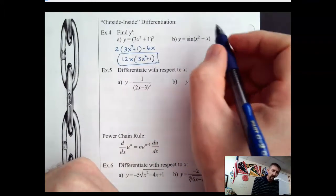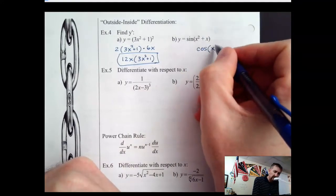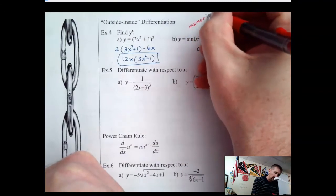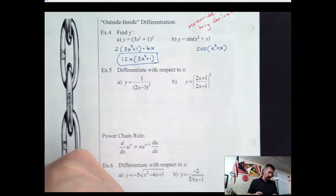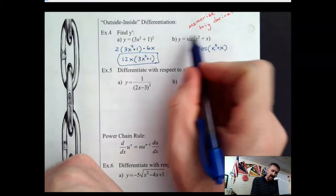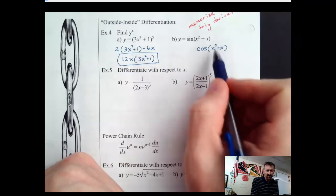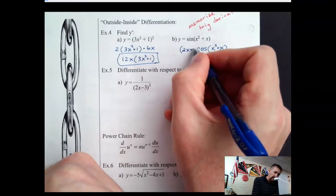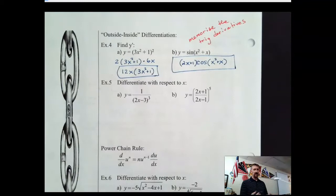The derivative of sine is cosine. You have to memorize those trig derivatives — you should have had them memorized already. Memorize trig derivatives. So now that's the derivative of the outside. Now we need to multiply it by the derivative of the inside. I would put that in front so that nobody gets confused and thinks it's part of the cosine angle. So the derivative of that is going to be 2x plus 1. I'm going to write that in front to avoid any confusion.